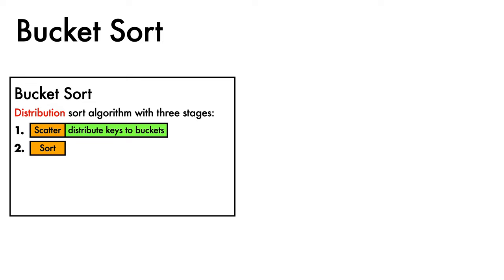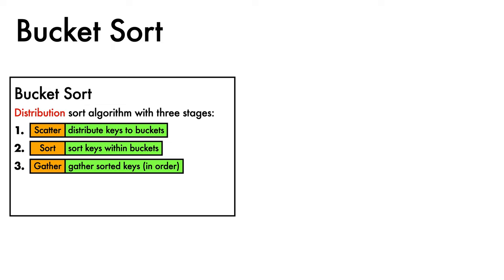Second, there is a sort operation that sorts keys within these buckets. Third, there is a gather operation that gathers the sorted keys back in order to produce a sorted result.